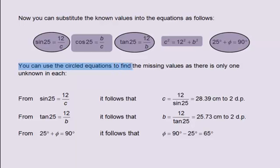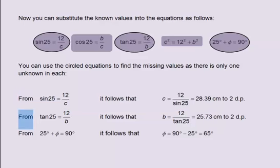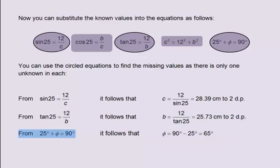You can use the circled equations to find the missing values as there is only one unknown in each. From sine 25 equals 12 divided by c, it follows that c equals 12 divided by sine 25, which equals 28.39 centimetres to two decimal places. From tangent 25 equals 12 divided by b, it follows that b equals 12 divided by tangent 25, which equals 25.73 centimetres to two decimal places. From 25 degrees plus phi equals 90 degrees, it follows that phi equals 90 minus 25 degrees, which equals 65 degrees.